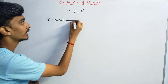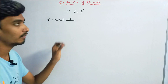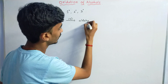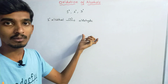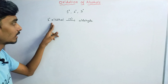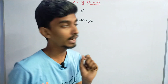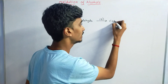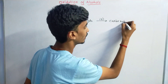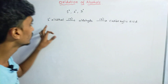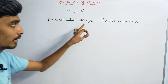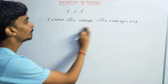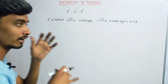In the presence of an oxidizing agent, primary alcohol is oxidized to give an aldehyde. The aldehyde can then be further oxidized. So the sequence is: primary alcohol, on oxidation, gives aldehyde, and aldehyde on further oxidation gives carboxylic acid.